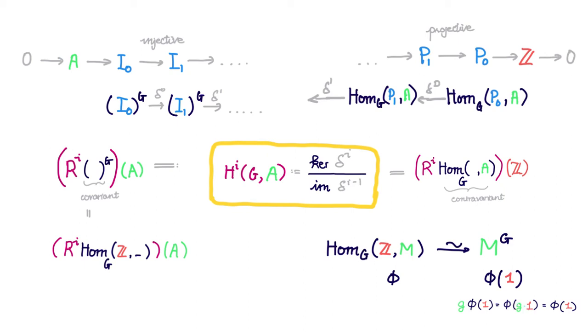So in particular here, 1 acted on by g is just 1. Thus we see that phi of 1 is fixed by every element of G and thus must lie inside the G invariant submodule of M.